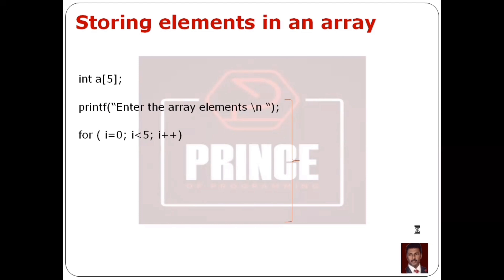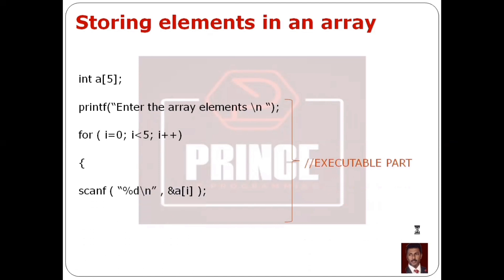We have i less than 5 as the test condition, so the loop repeats 5 times corresponding to the size of 5. Then i++ for the next iteration. We open the for block with a left curly brace. We store elements using the scanf function to read values from the keyboard. The format specifier is %d for integer type.